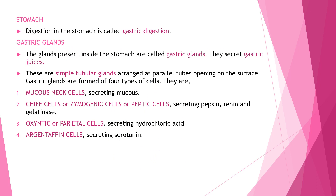Gastric digestion: the gastric glands produce gastric juice and hydrochloric acid. There are four types of cells present in the gastric gland: mucus neck cells secreting mucus; zymogen or peptic cells secreting pepsin, rennin, and gelatinase; oxyntic or parietal cells secreting hydrochloric acid; and enterochromaffin cells secreting serotonin.